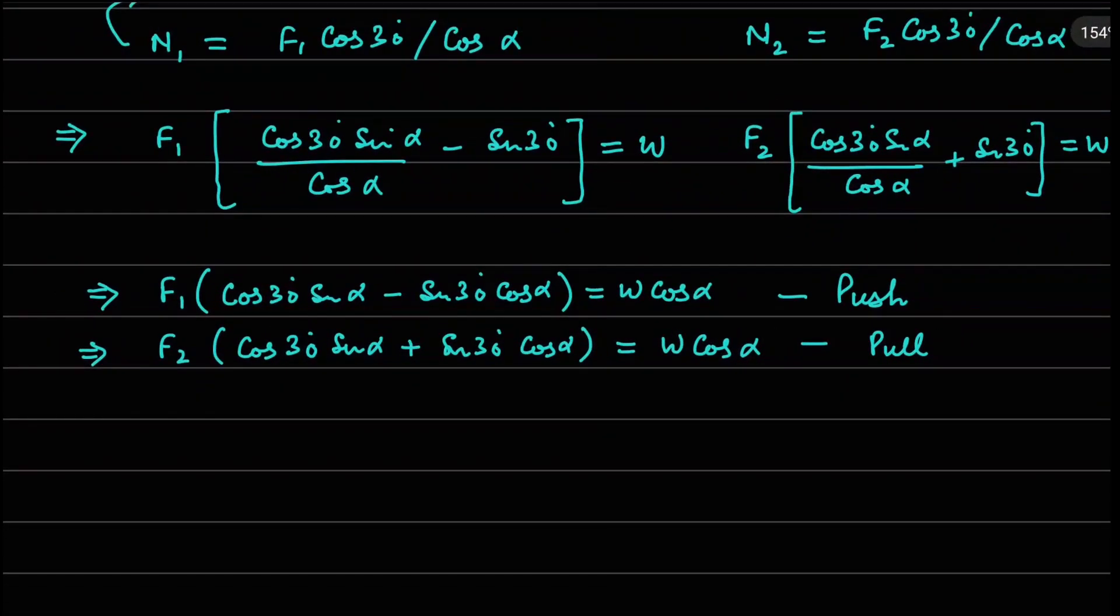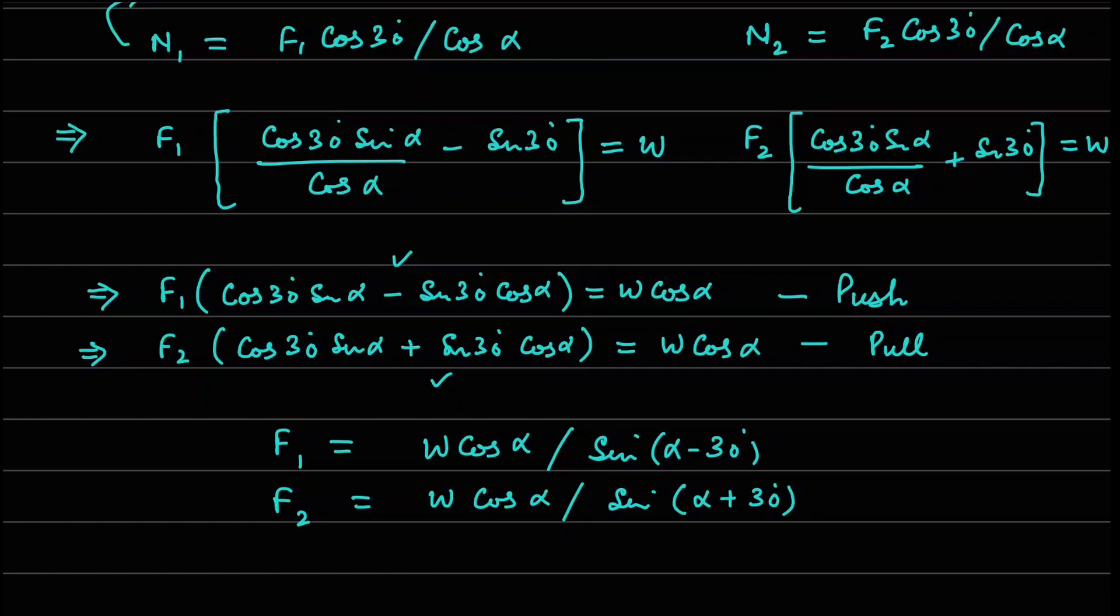Now we can see that we can use trigonometric relations so that the first relation can be written as W cos alpha divided by sin of alpha minus 30 degrees, and the second one can be written as W cos alpha divided by sin of alpha plus 30 degrees. And without even doing any calculation at this point, we can notice this angle will be more than this angle right here. Therefore the denominator is going to throw a bigger value, and that's why F2 is expected to be a lower number.